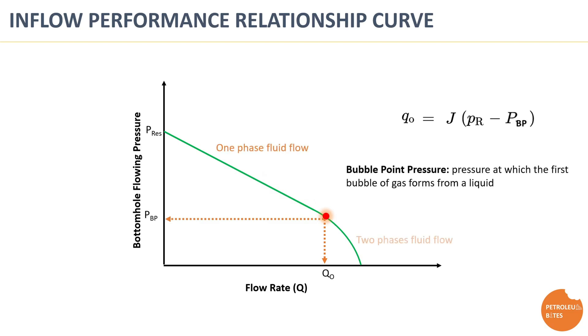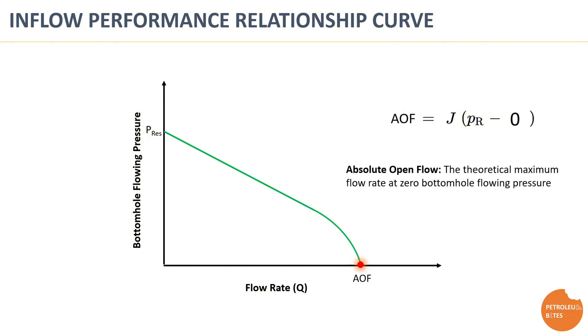Bubble point pressure is a pressure value at which the first bubble of gas is formed from a liquid. When the well flows at a pressure greater than the bubble point pressure, it flows as a one phase flow, and it flows as a two phases flow at any pressure lower than bubble point pressure. When the bottom hole flowing pressure drops to zero, theoretically the maximum flow rate of the well has been achieved. This point is called the absolute open flow.